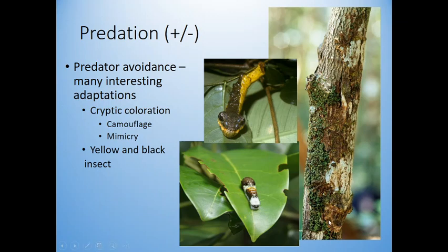You might have noticed this lizard — here is the mouth, eyeball, eyeball, thumb, toes, back leg, and the point of the tail. That is a crazy-looking lizard. Nothing is going to be able to find it, pretty much.